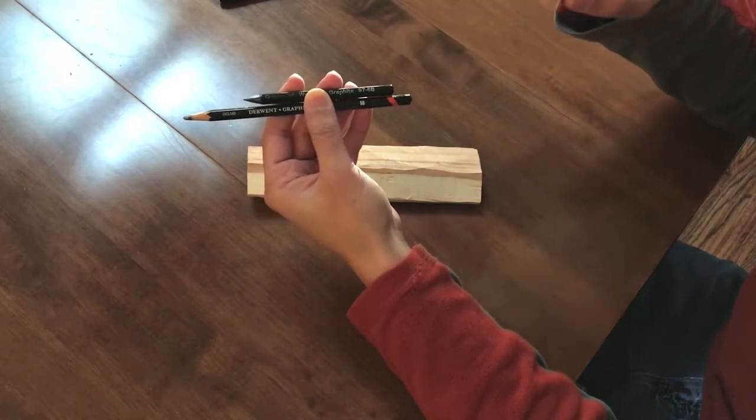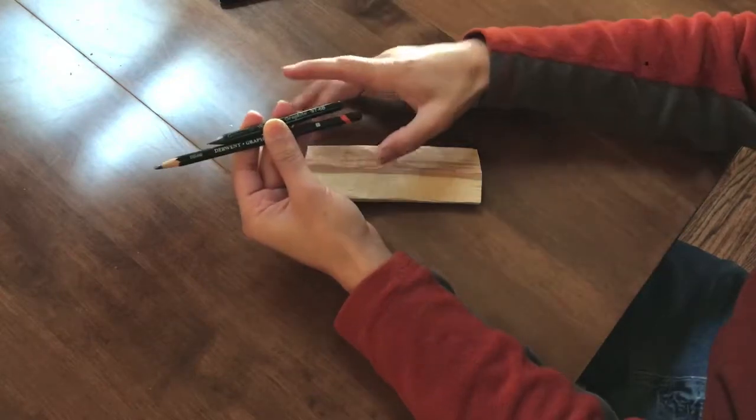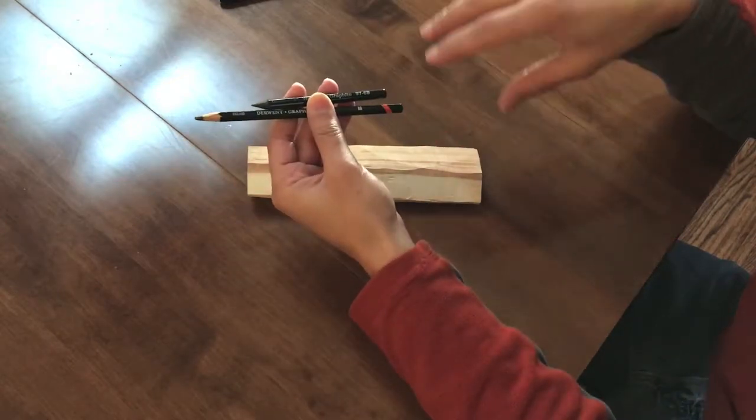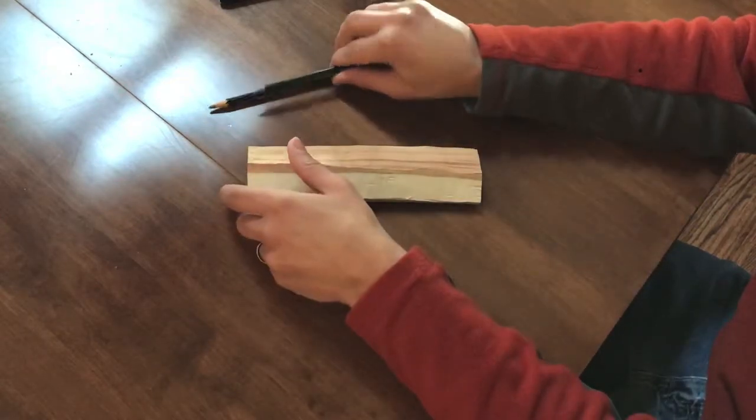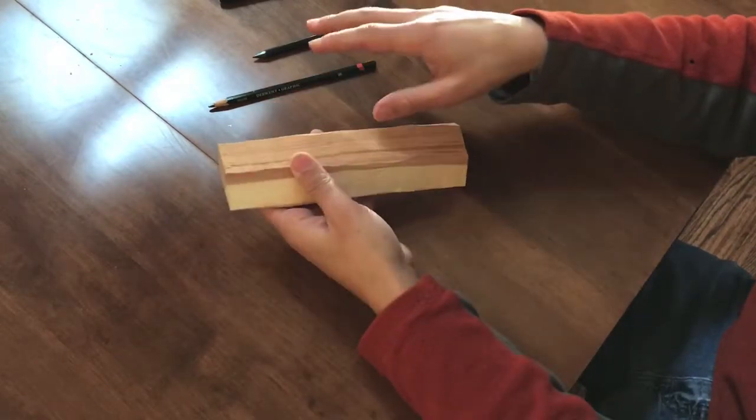What this does is it lets me get a very black line that I can easily see while I'm working, keeping in mind where the handle is and stuff like that. I can just do a quick glance while I move the piece of wood around.